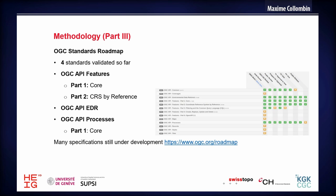Currently, through the OGC process, there are four standards validated so far: the OGC API Features in its core component and the CRS components, the OGC API EDR for environmental data retrieval, and the OGC API Processes in its core components. Many specifications are still under development. You can check the link below if you want to know more about these processes.